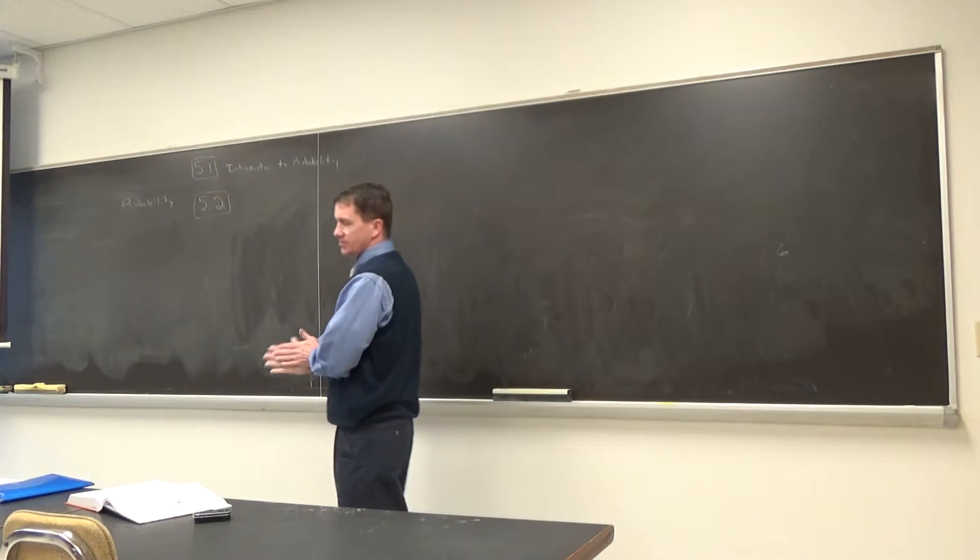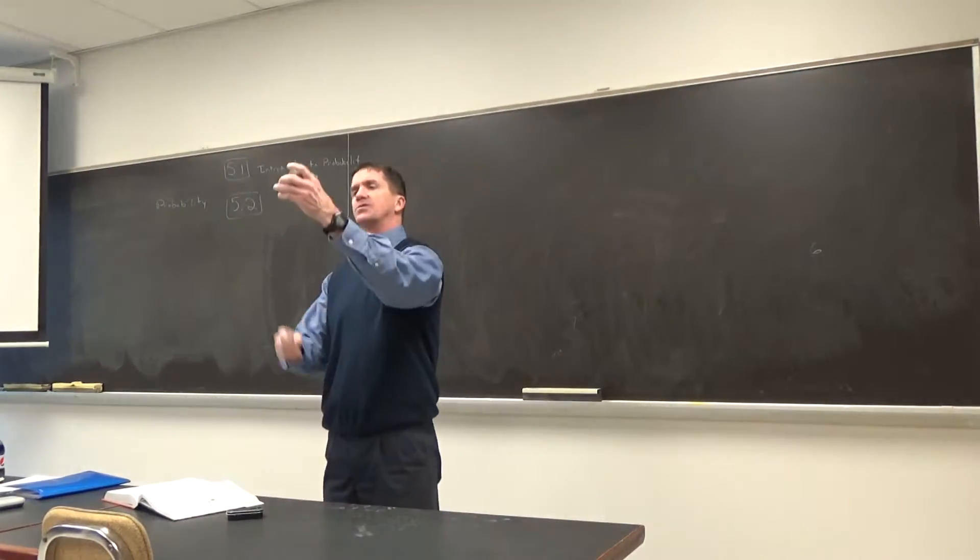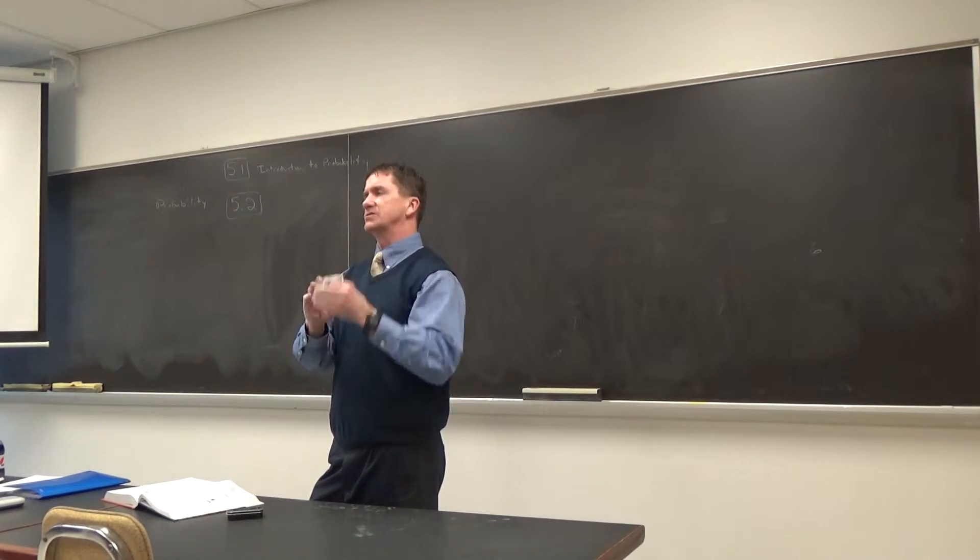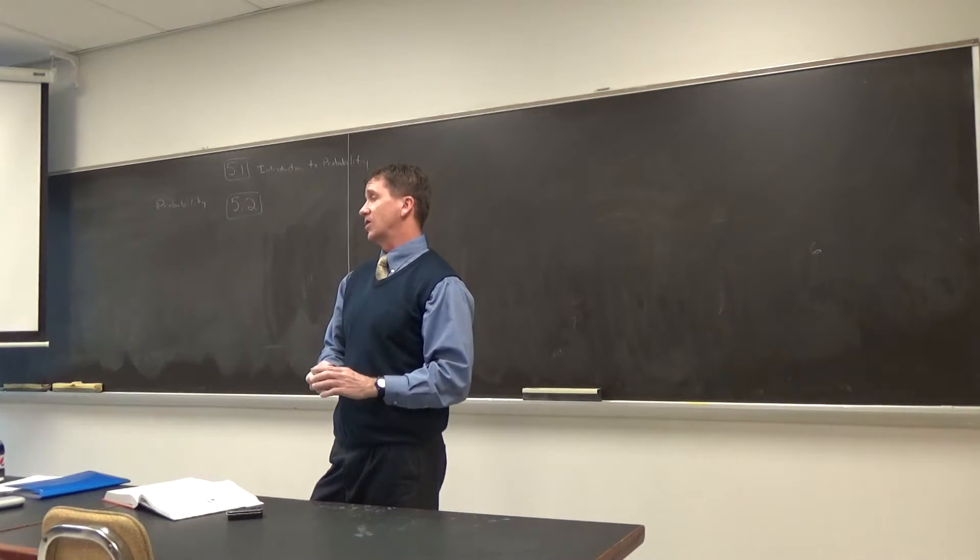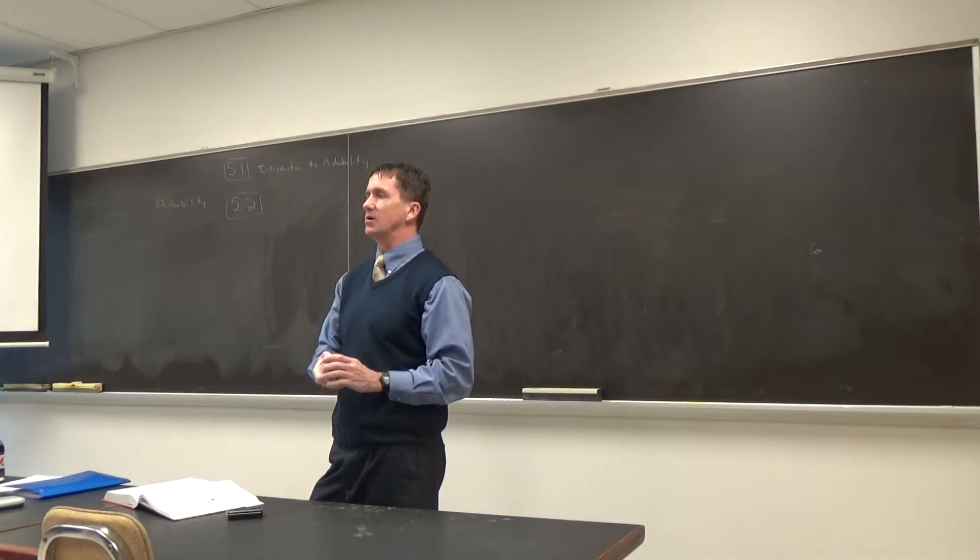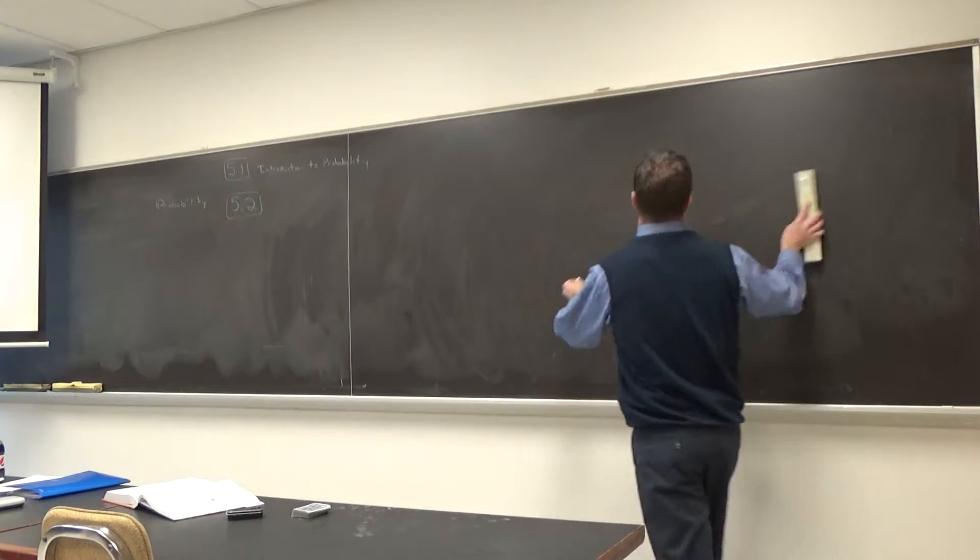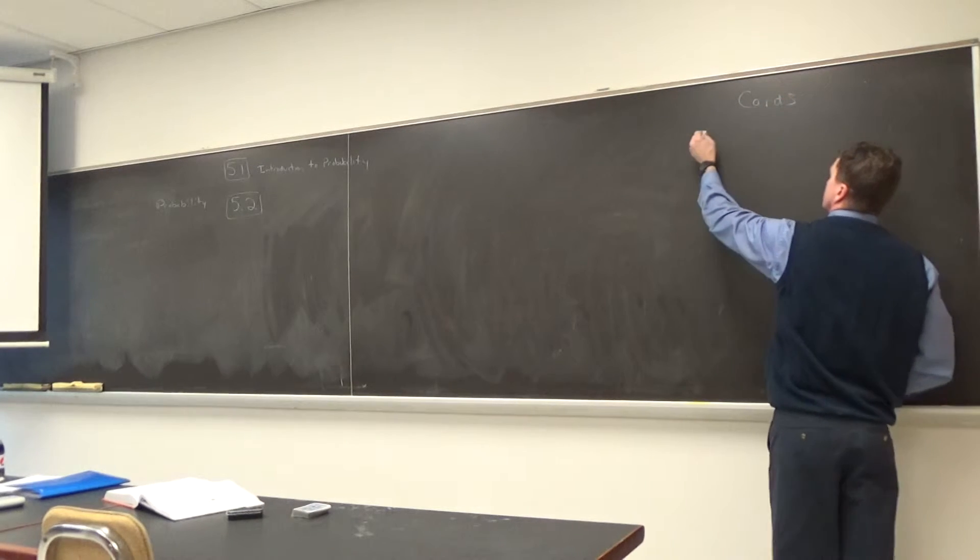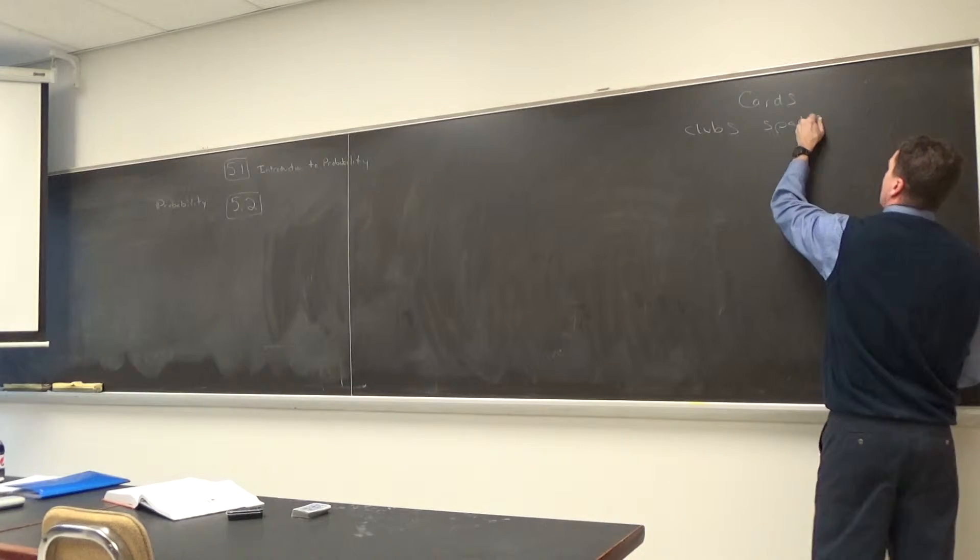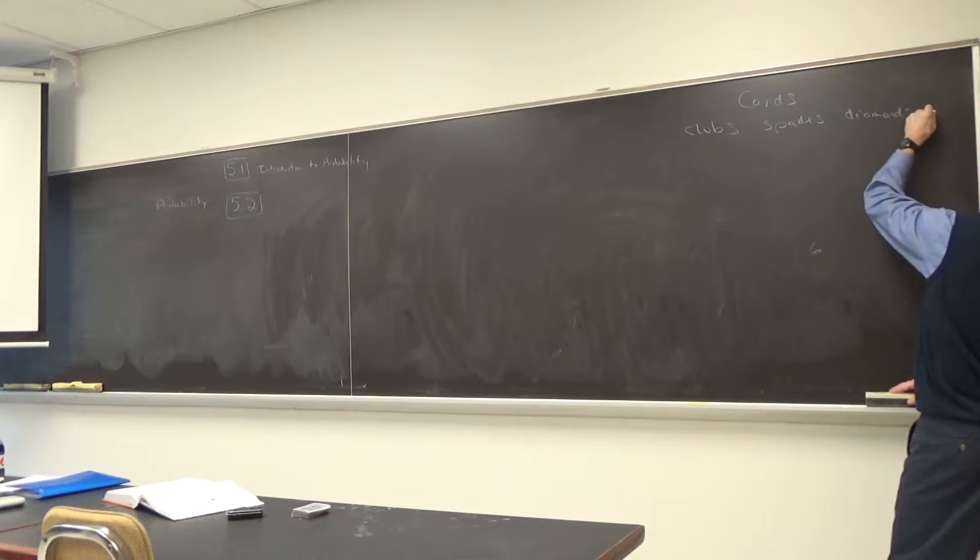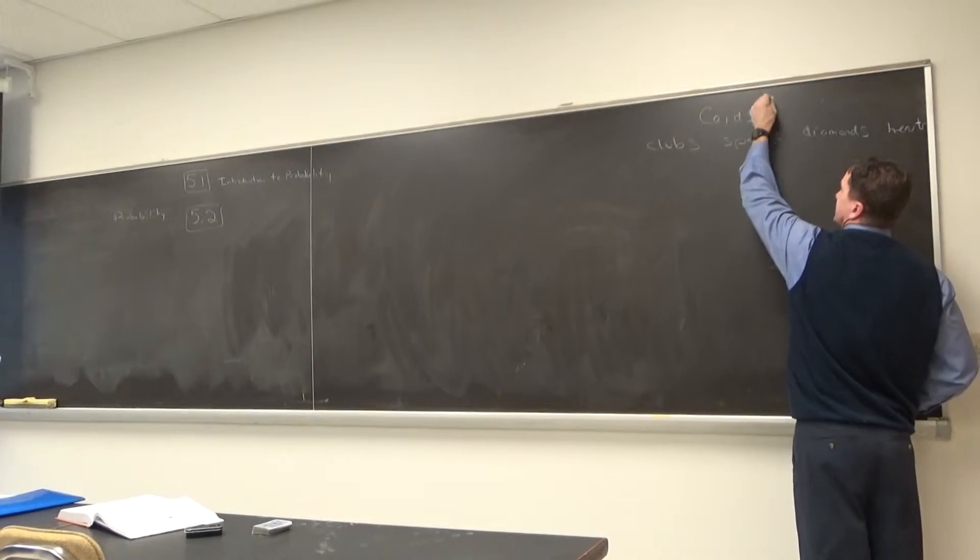We're going to talk about the addition rule for probability. To do this, to understand the basic rule, it always helps with cards. I'm going to put on the board these cards, at least write some stuff about it. There's a total of 52 cards in a deck. There are four suits. What are the suits? Clubs, hearts, diamonds, and spades. Outstanding. So those are the four suits. If you've never played cards before, there's four suits: hearts, diamonds, spades, and clubs. And there's a total of 52 cards.